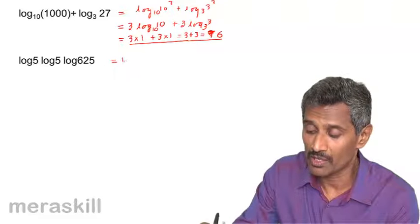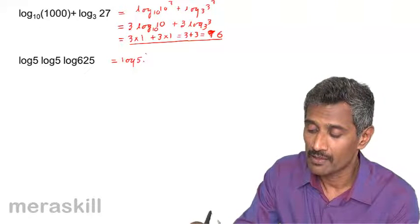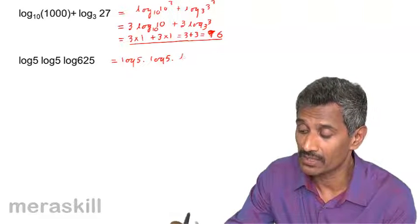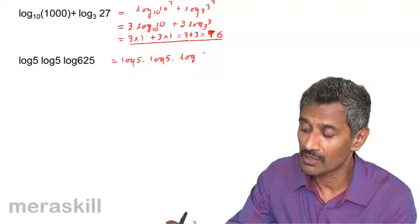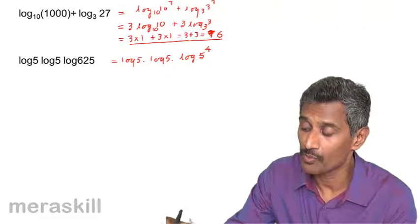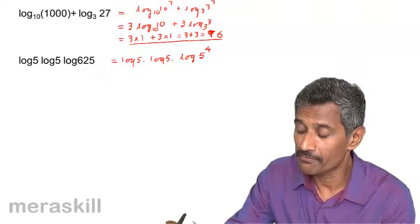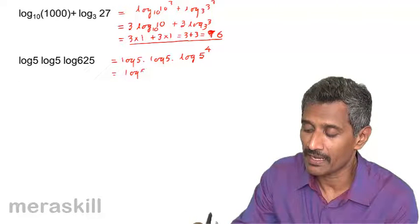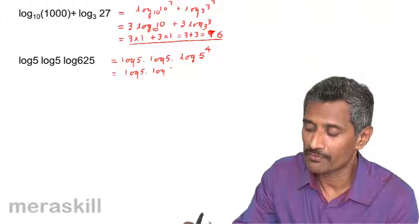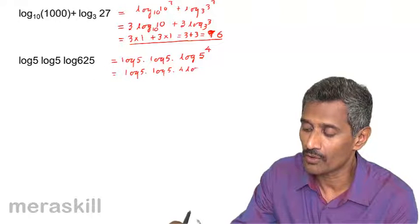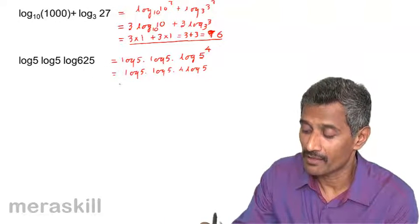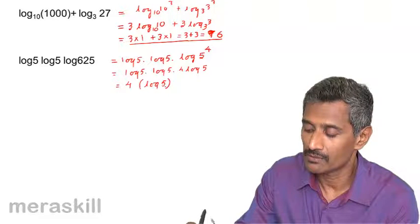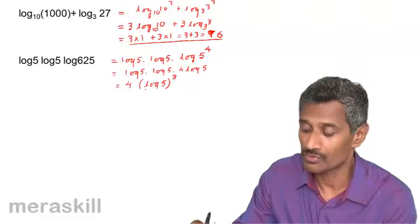Log 625 is nothing but log of 5 raised to 4. So it's log of 5 raised to 4, which can be written as log 5 times log 5 times 4 times log 5. This equals 4 times log 5 cubed. So the final value is 4(log 5)³.